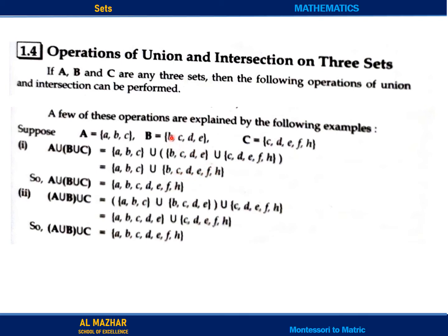The elements of B and C that are common will be taken only once — we will not write them twice. So this is set A, and B union C is the second set. The two unions we will write together, so A union B union C is equal to all the elements written together. This is the solution.